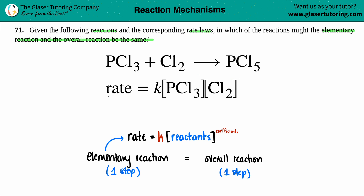They gave us a rate law, so let's see if everything checks out. The rate law says rate equals K — that's standard. Now let's see if it matches this elementary step. We have PCl3 as one reactant — PCl3 is included. We have Cl2 — Cl2 is included. We don't care about the products. PCl3 has a coefficient of one in the equation, and PCl3 is raised to the first. Cl2 has a coefficient of one, and Cl2 is raised to the first. Everything checks out.